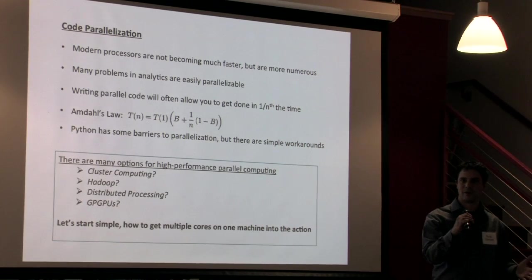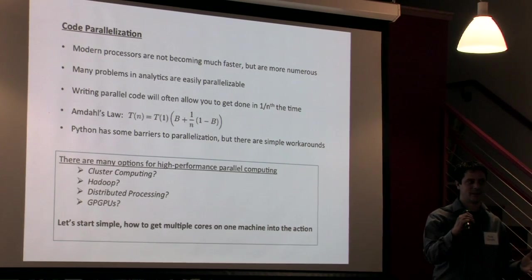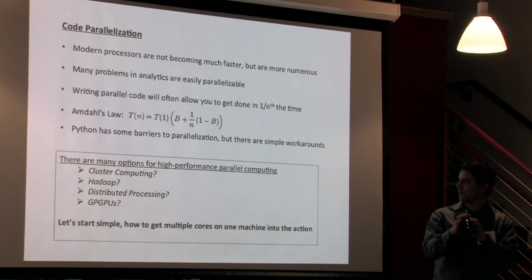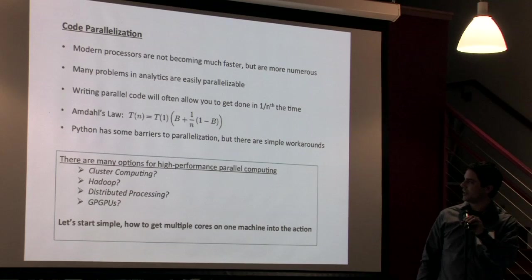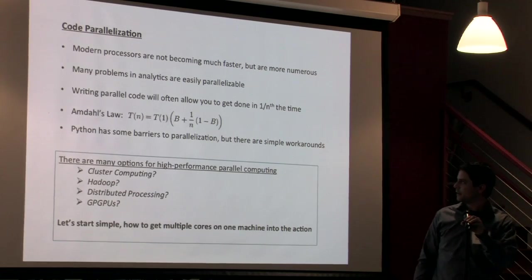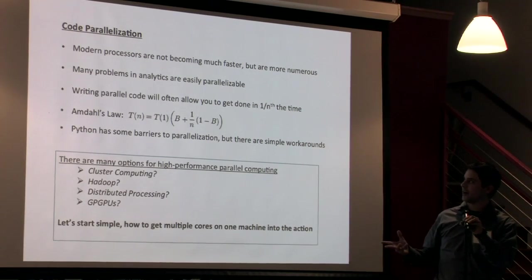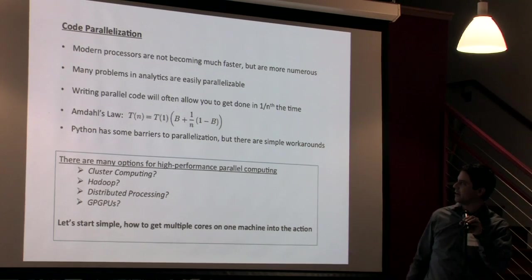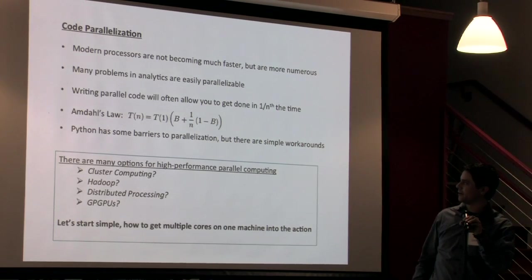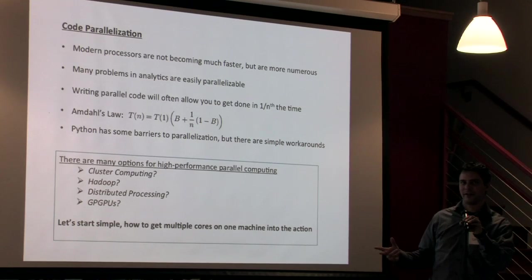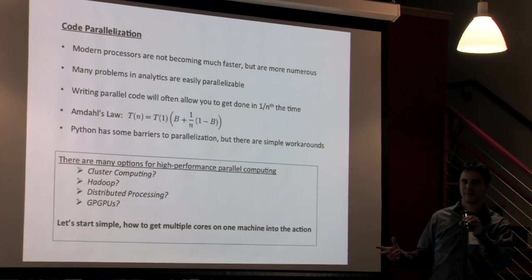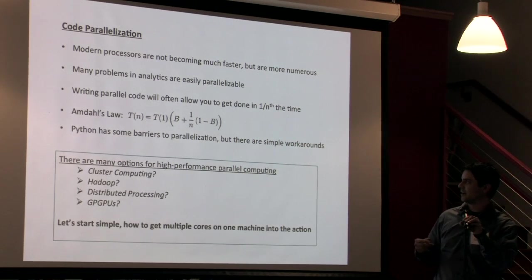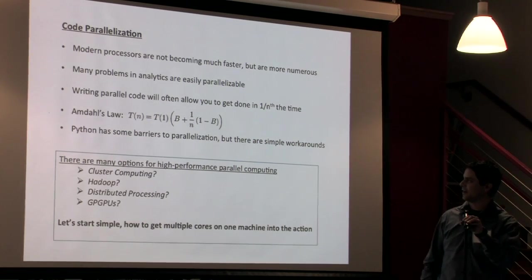In optimal situations you can write code that will often allow you to get done in one over n of the time that it would take for a serial operation. If you really know the mathematics for this just look at Amdahl's law which says that the time it will take for m processors is basically the time for one processor multiplied by this quantity here where B is the amount of time that your code takes for the parts that are purely serial and cannot be put into parallel. But as long as most or all of your code can be put into parallel the speed ups can be by that factor of one over n.